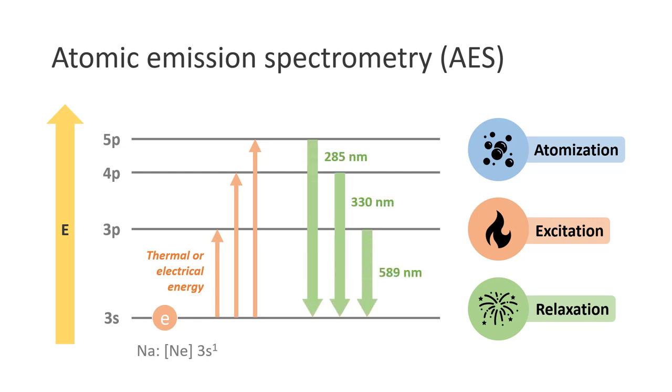As shown in this energy diagram here, the wavelength of the emitted light depends on the energy gap between the atomic orbitals, which is unique for every element in the periodic table. In this example, this wavelength of 589 nanometers is responsible for the yellow light we see in fireworks that contain sodium salts.